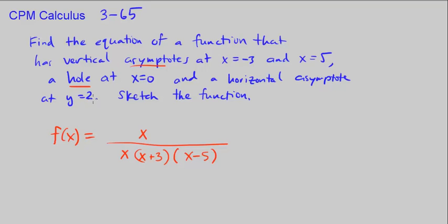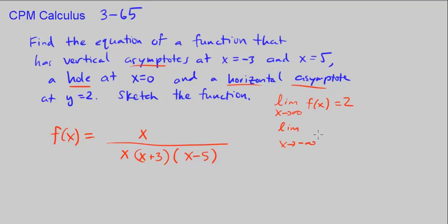For a horizontal asymptote at y equals 2, remember that horizontal asymptotes come from taking the limit as x approaches infinity of our function — we want that to equal 2. Or you could take the limit as x approaches negative infinity of f of x, and that also equals 2. Either or both being true gives a horizontal asymptote at y equals 2.